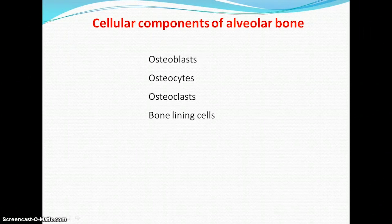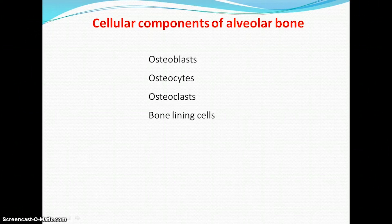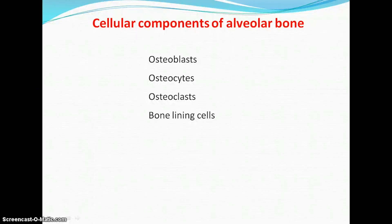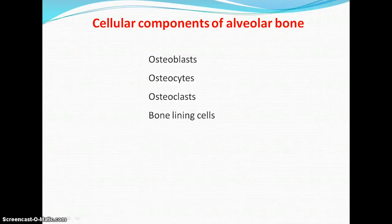Osteocytes are osteoblasts that get entrapped into the bone lacunae during bone deposition. They comprise more than 90 percent of the cells within the bone matrix and form a network of cytoplasmic processes extending through cylindrical canaliculi to blood vessels and other osteocytes. Their main function is to control the extracellular concentration of calcium and phosphorus and to mediate adaptive remodeling via cell-to-cell interactions. Bone lining cells cover inactive or non-remodeling bone surfaces; they have a flattened shape with few organelles and are hardly engaged in bone formation or resorption.